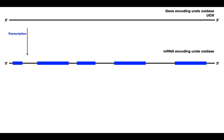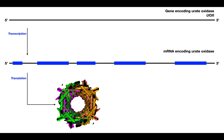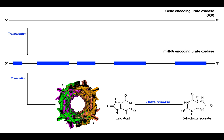The UOX gene is transcribed into corresponding mRNA — the blue regions are exons and the black regions in between are introns. The mRNA is processed, spliced, and matured, then eventually translated into the protein urate oxidase. Urate oxidase catalyzes its reaction, which is to oxidize uric acid into the compound 5-hydroxyisourate.